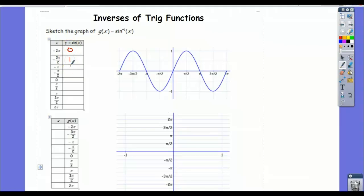If I plot the key points in this table, I would get 0, 1, 0, negative 1, 0, 1, 0, negative 1, 0.